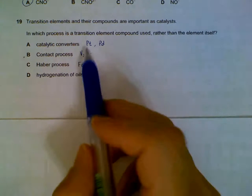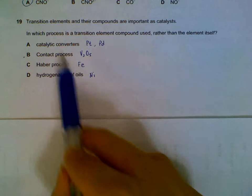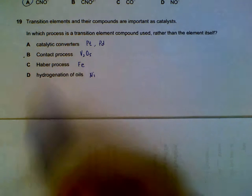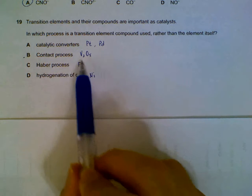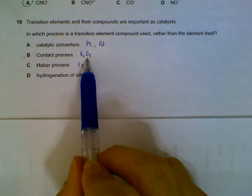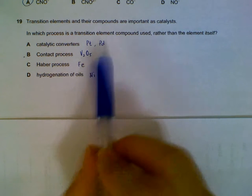19. We have to be clear about the types of catalysts used in the four processes. For A, C, and D, we are using elements. And for contact process, we are using vanadium 5 oxide, which is a compound.